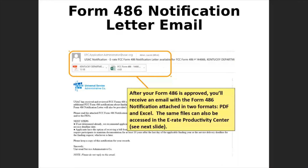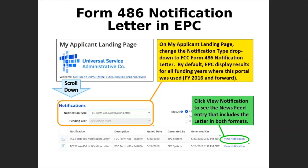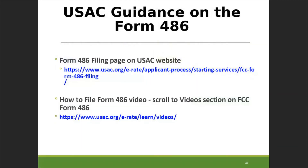Back in the presentation: this slide shows what the form 486 notification email looks like. You'll have a couple of attachments — print the PDF for your records or save both files electronically. The instructions for accessing the notification letter in the e-rate productivity center are under the notifications section. For more guidance on the form 486, you can look at the USAC website or view USAC's video on filing the form.